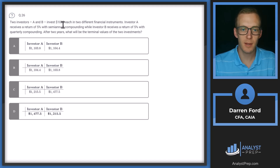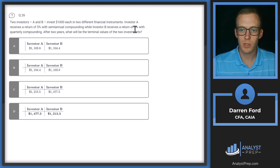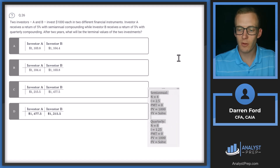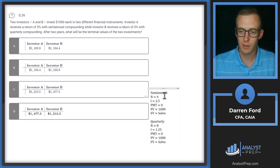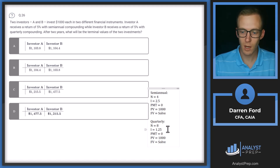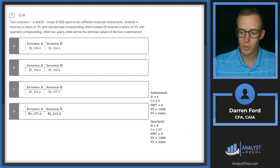Question 26. Two investors, A and B, invest $1,000 each in two different financial instruments. Investor A receives a return of 5% with semi-annual compounding, while Investor B receives a return of 5% with quarterly compounding. After two years, what will be the terminal values of the two investments? We'll use a time value of money calculator. For semi-annual: N = 4, I = 2.5%, PV = 1000, PMT = 0, solve for FV. For quarterly: N = 8, I = 1.25%, PV = 1000, PMT = 0, solve for FV.